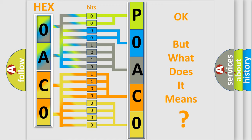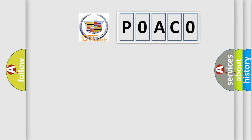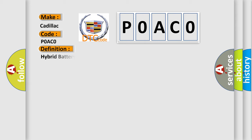We now know how the diagnostic tool translates received information into a more comprehensible format. The number itself does not make sense to us if we cannot assign information about what it actually expresses. So, what does the diagnostic trouble code P0AC0 interpret specifically for Cadillac car manufacturers? The basic definition is: Hybrid battery current sensor performance.